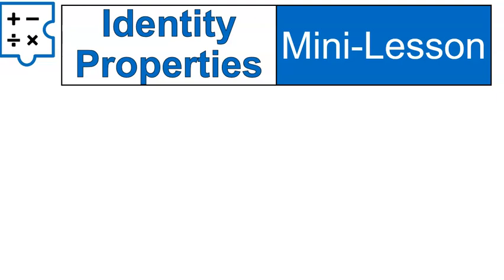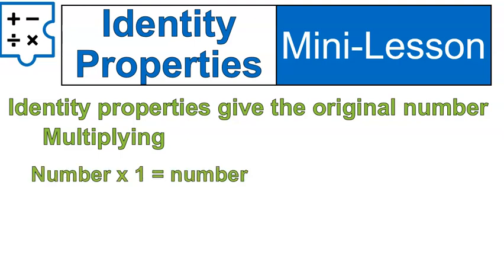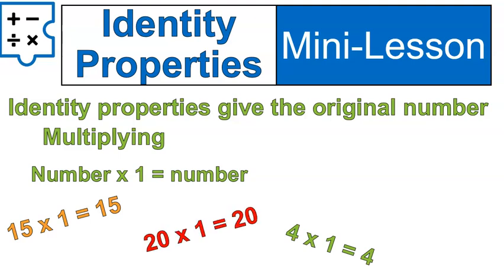Let's look at the identity property of multiplying. What do you have to multiply times a number to get the original number again? This might have been your favorite times tables when you were growing up. Any number times one gives you that same number again. So, using the examples we just saw: fifteen times one is fifteen, four times one is four, twenty times one is twenty, seven times one is seven.